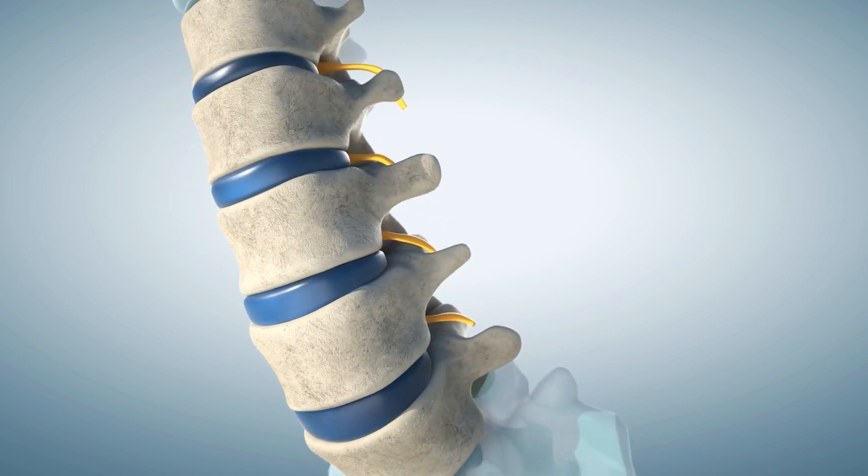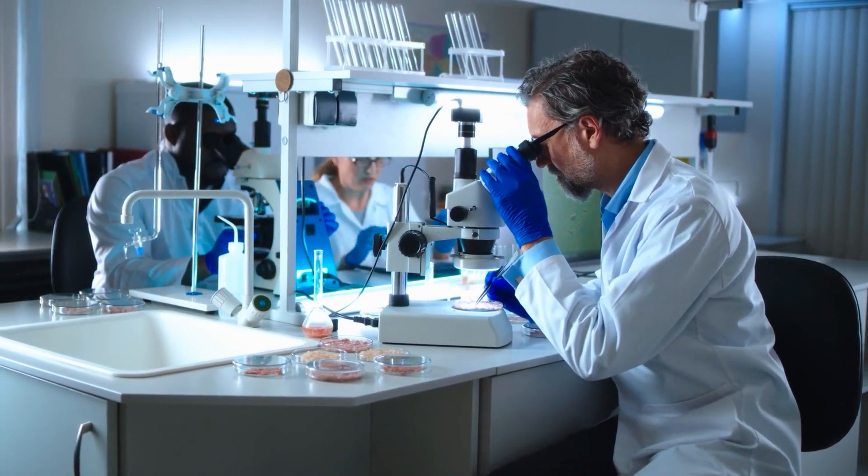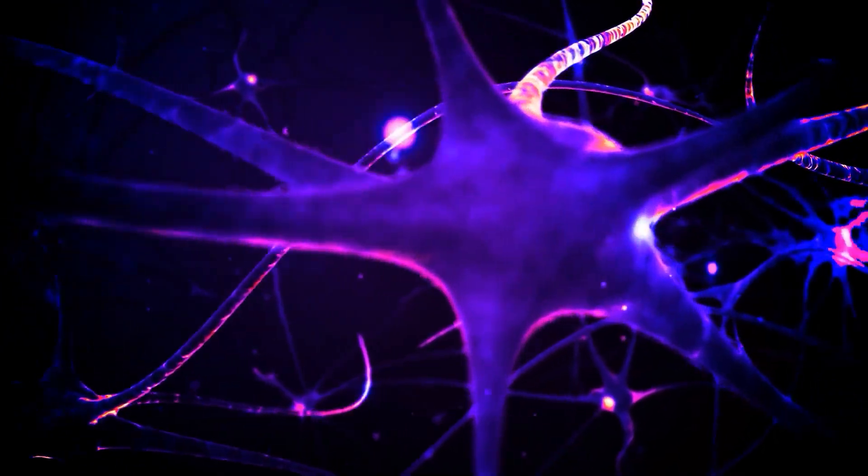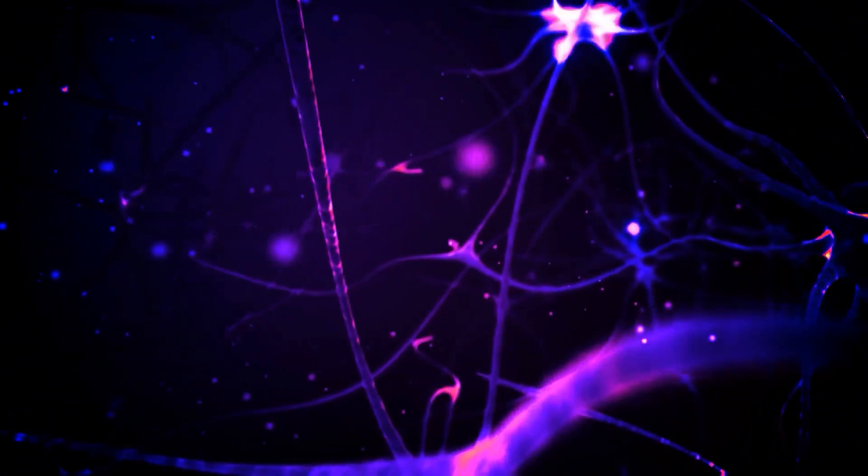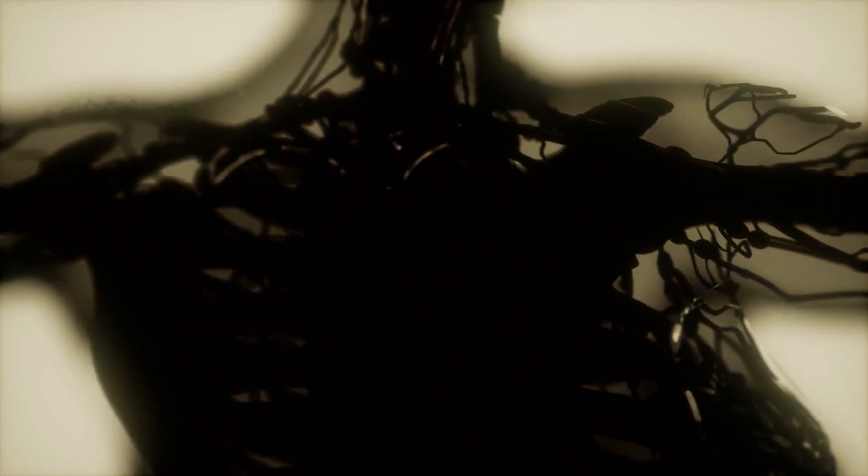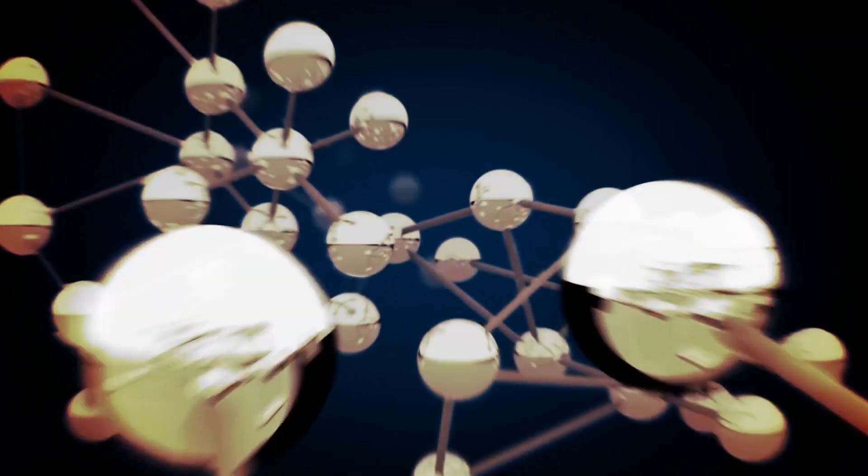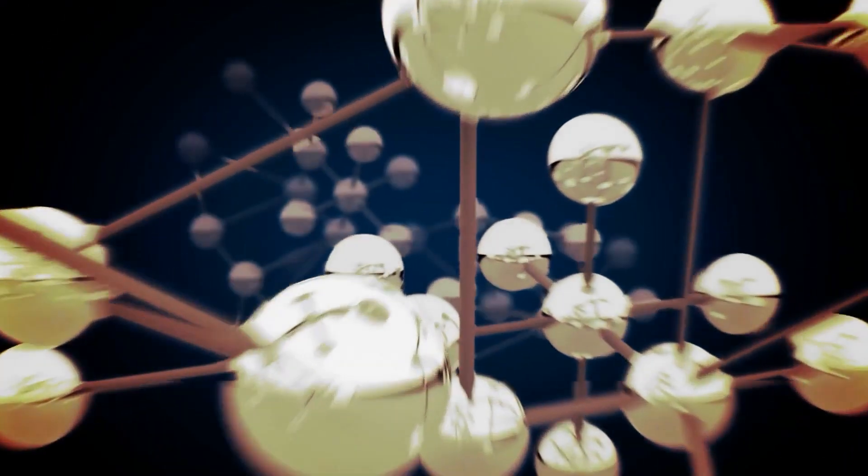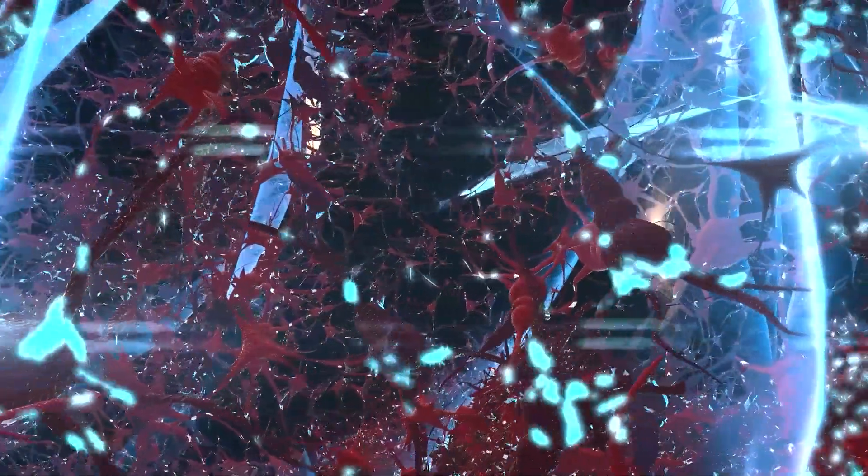It's made up of individual protein units that can automatically link together in water to form lengthy chains. A network of these chains can imitate the extracellular matrix of the spinal cord within the body, giving cells a framework to develop on. When these molecules come into contact with cell receptors, they cause axons to renew, myelin to rebuild, and blood vessels to sprout.